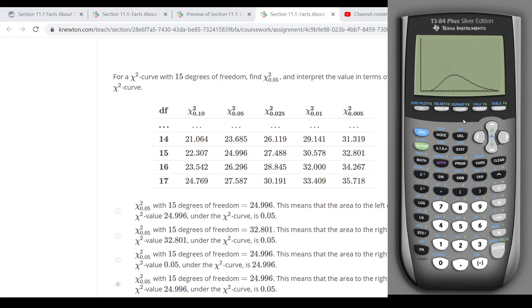Now what we're asking about is what they're saying here—what value on the number line, what value on the x-axis here has five percent to the right of it? 0.05.